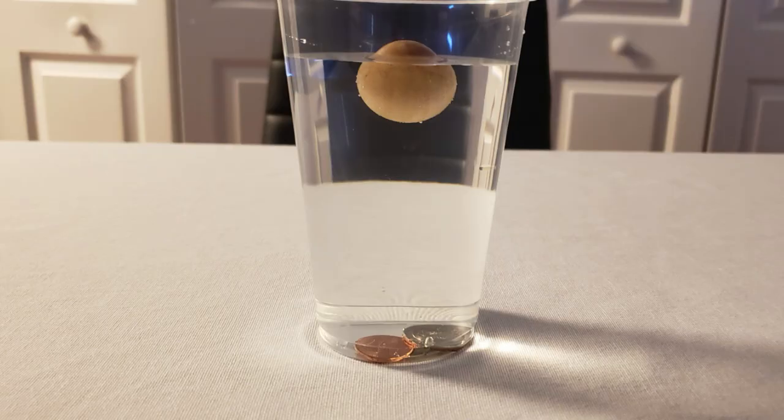Some wooden materials have a density of 0.7 grams per milliliter, which is less than the density of water. The density of water being 1 gram per milliliter. And that's why the wooden sphere floats on water. It's less dense than water. Copper has a density of 8.9 grams per milliliter, and zinc has a density of 7 grams per milliliter. Both have a higher density than water, and that's why they sink to the bottom.